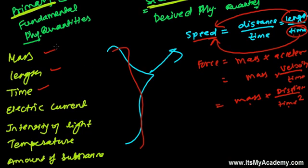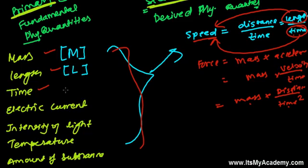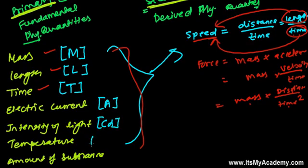These fundamental quantities are represented using symbols inside square brackets. Mass is represented as [M], length as [L], time as [T], electric current in ampere, intensity of light in candela [cd], temperature in kelvin, and amount of substance as mol. This is how we represent the fundamental quantities.